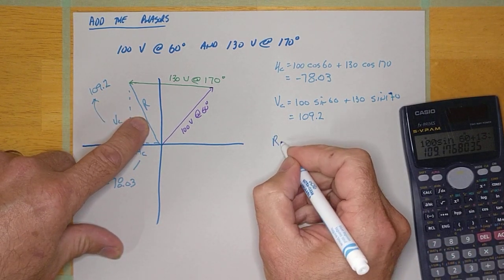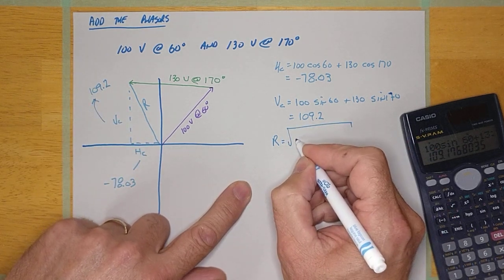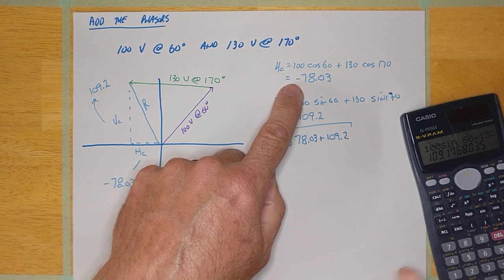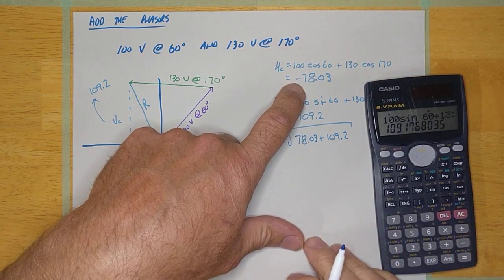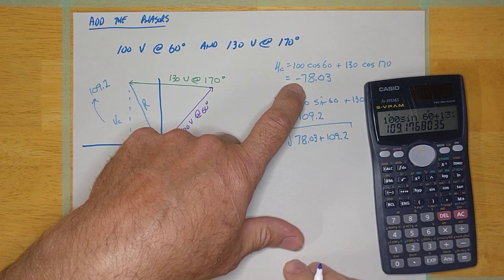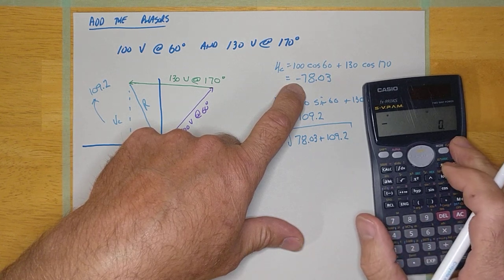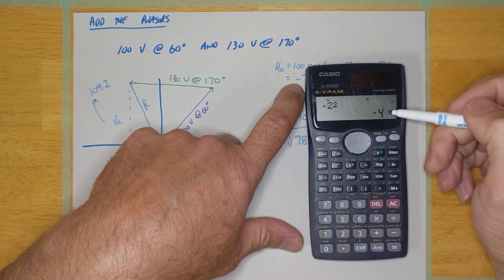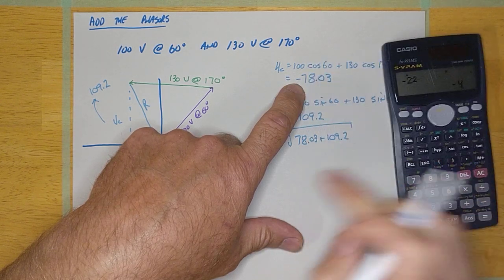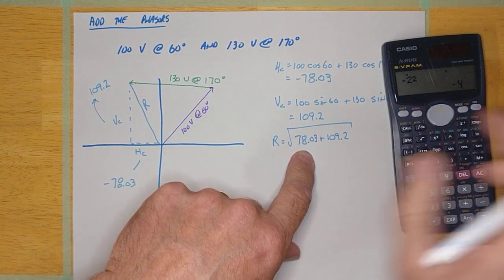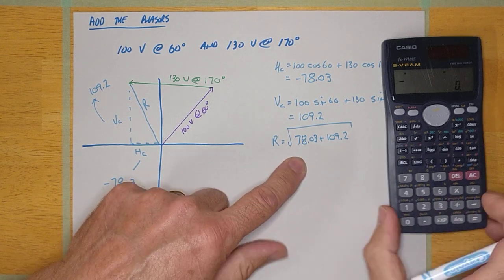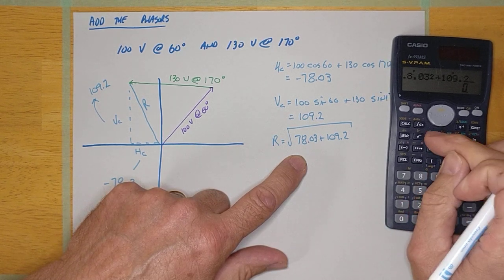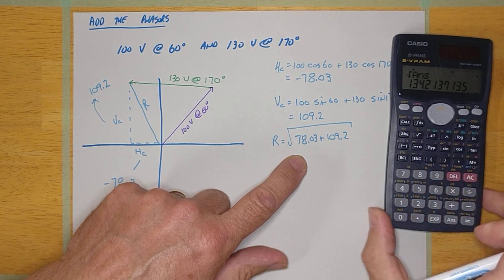So the resultant, this is a right angle triangle now, should be the square root of 78.03 squared plus 109.2 squared. Now notice that I ignored the negative sign here. And that's because if you take a negative number and square it, the number is going to be positive anyway. Minus 2 squared is 4. 2 squared is 4. But my calculator, stupidly, if I put in here minus 2 and hit squared, it's going to think the answer is minus 4. See that? And that's wrong. So don't do that. When you're doing Pythagorean theorem, just put the number in positive. Your calculator might mess you up if you put it in as a negative number.